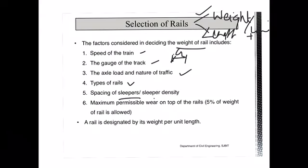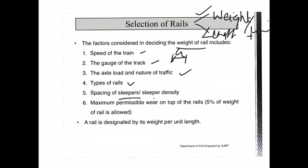One thing you should remember here: maximum permissible wear on the top of the rail is restricted to 5% of the weight of the rail. So if you see the wear is greater than 5%, that rail section needs to be removed and replaced by a new rail section, or it has to be repaired. We will discuss in detail what this wear is and the limits in the defects of the rails. But whenever you calculate the weight of the rail, keep in mind that a 5% provision has to be given for the wear and tear of the rail.